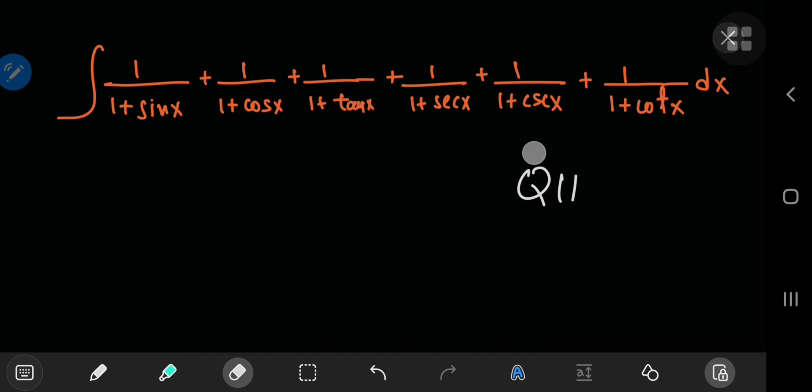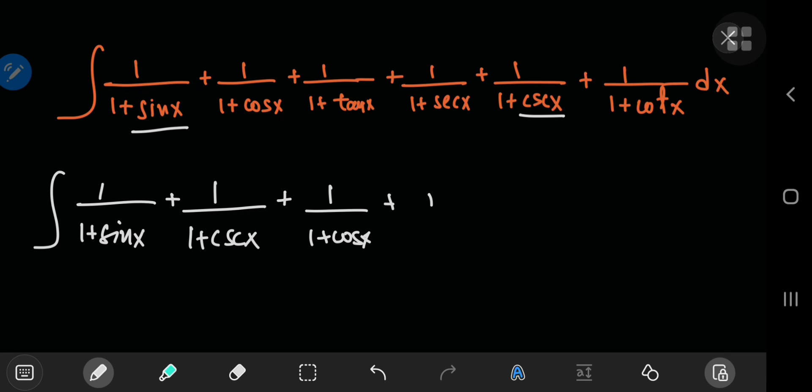This is actually pretty easy because you have every trig ratio as well as its reciprocal, so just gather them together: 1 by 1 plus sine x plus 1 by 1 plus cosecant x plus 1 by 1 plus cosine x plus 1 by 1 plus secant x, finally 1 by 1 plus tangent x plus 1 by 1 plus cotangent x.